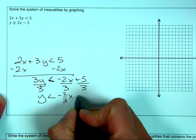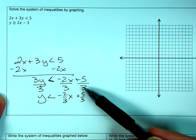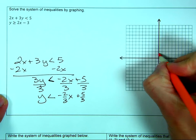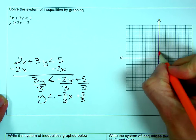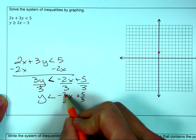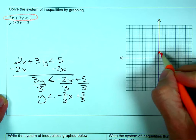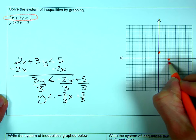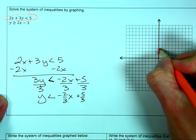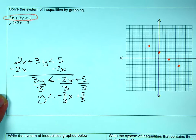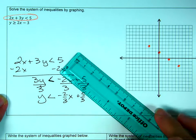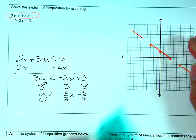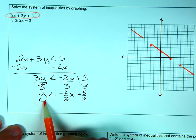Just a reminder: only switch the inequality sign when dividing or multiplying by a negative. This one didn't turn out super pretty — we have a y-intercept of 5/3, which is about 2/3 of the way between 1 and 2. The slope is -2/3, so I go down 2 and right 3. It's less than with no equal sign, so the line is dashed, and less than with y alone means I shade below the line.